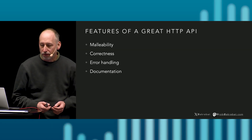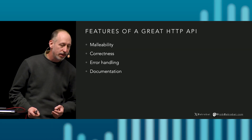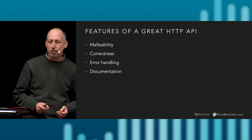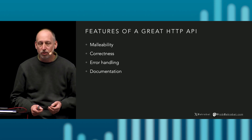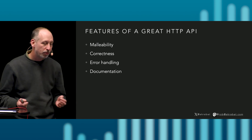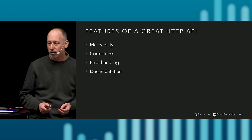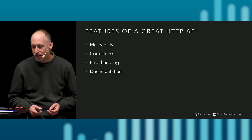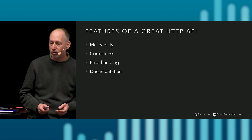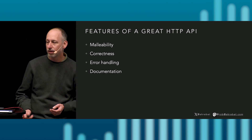So these are the things I want to talk about. What are the features of a great API? We're going to talk about malleability, correctness, error handling, and documentation. There's quite a lot that makes up a good API. Let's look at each one in turn.